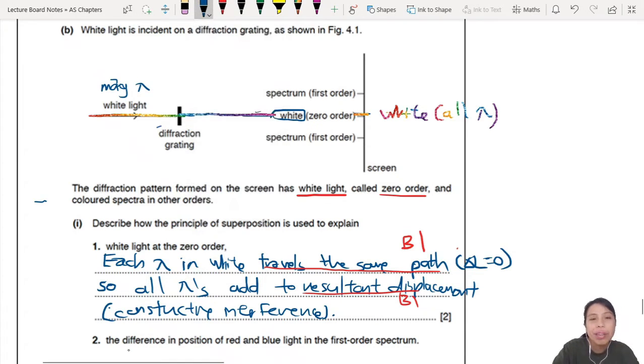Then they say, describe how you can explain the difference in position of red and blue light in the first order spectrum. So yes, your red and blue light will spread out differently because they're different wavelengths. So for example, if I want to look at red light compared to blue light, red light will diffract a lot. Blue light will diffract maybe lesser because wavelength smaller. This angle is smaller, this angle is bigger, all for the first order.